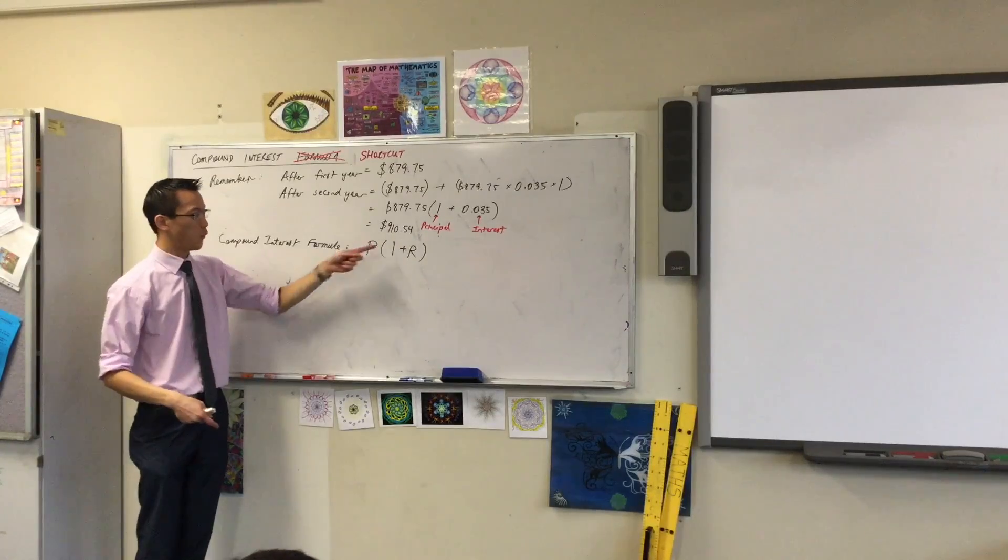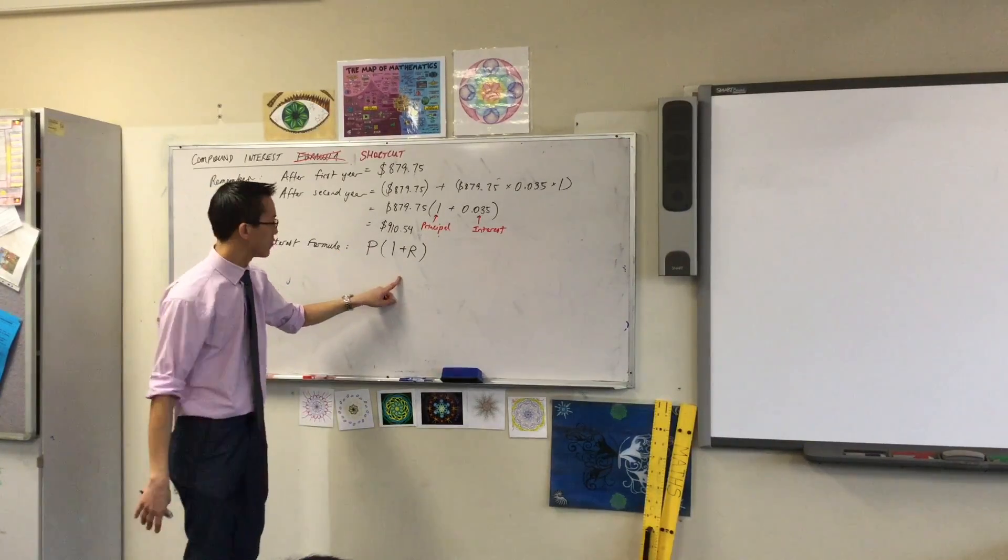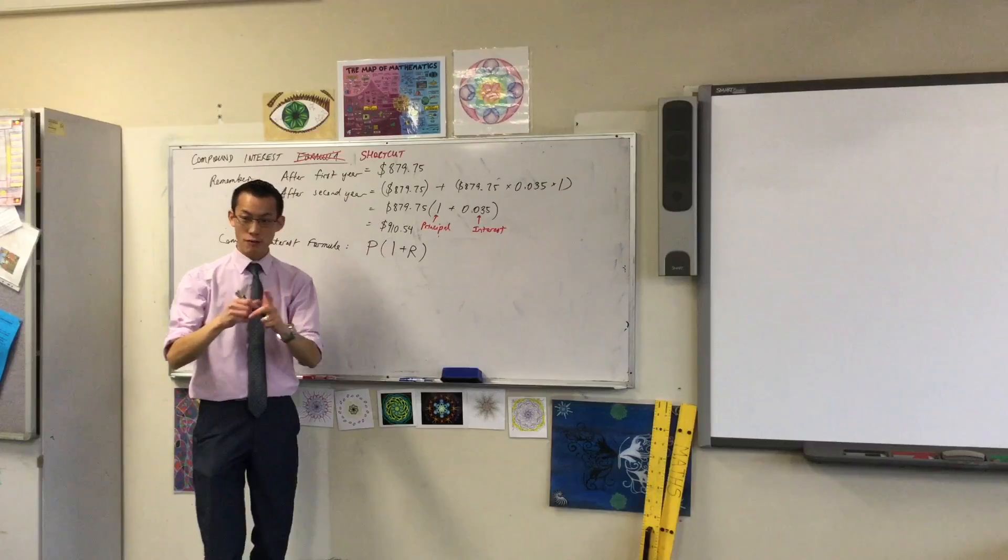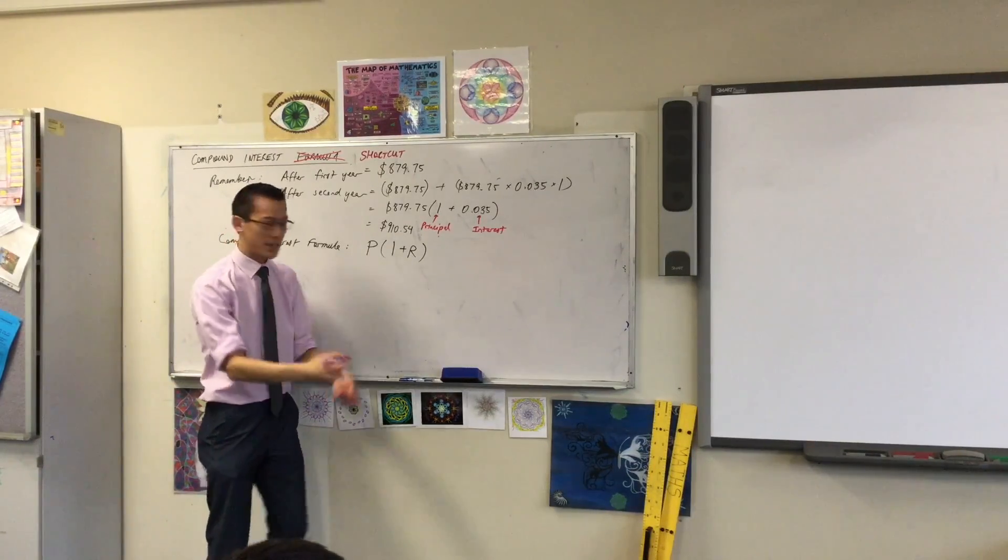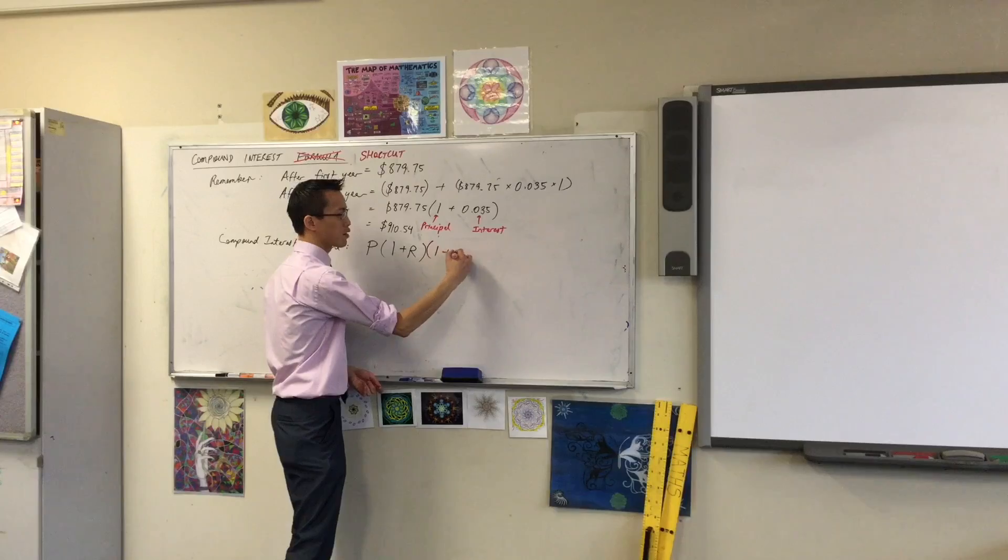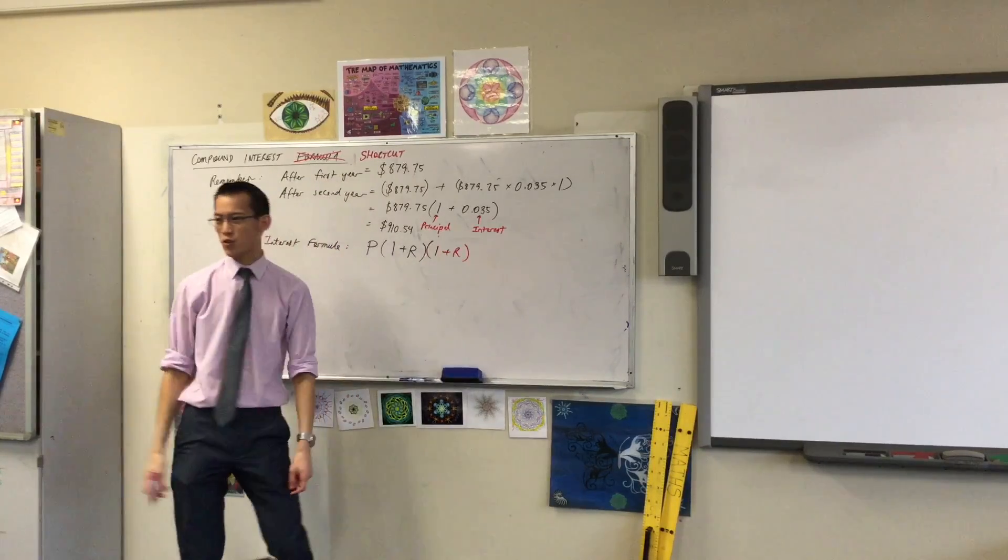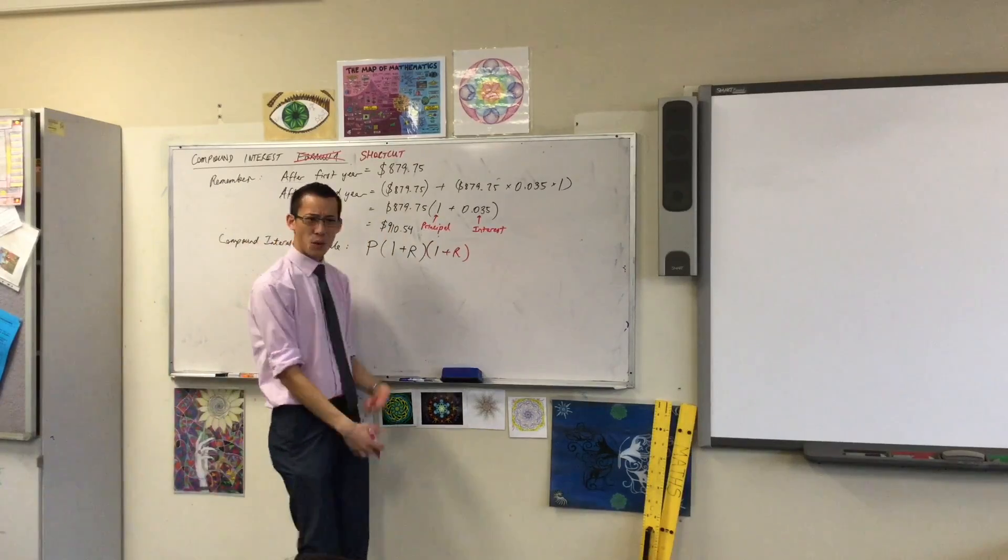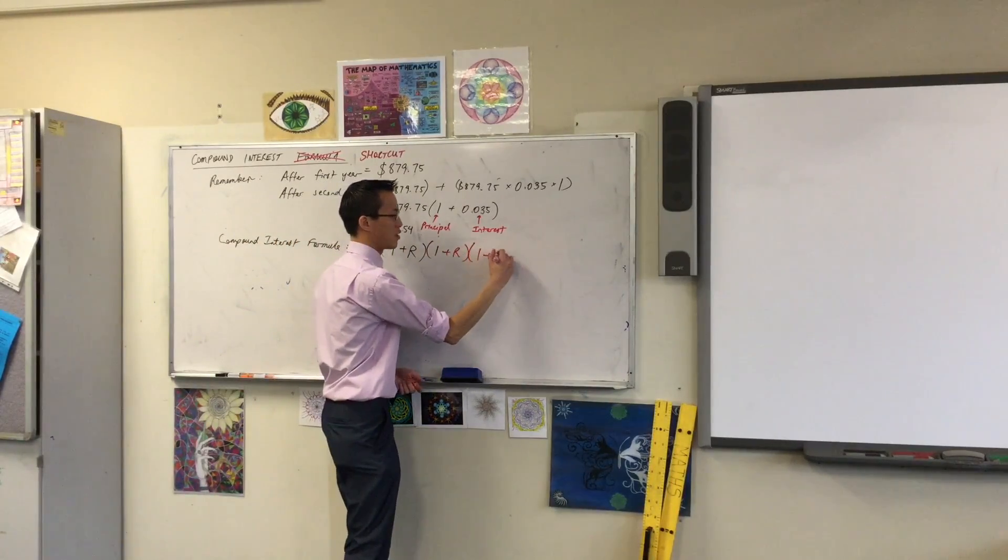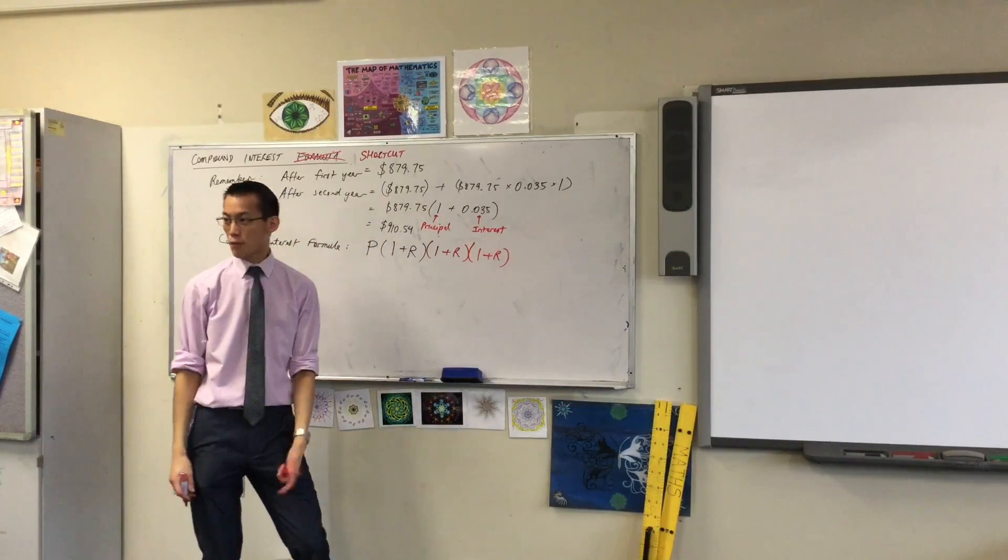Now, we were doing it one year at a time, but if I want to do it lots and lots of years, all I have to do is, now don't write this down because I'm going to rub off in a second. If I wanted to do another year, I would multiply by 1 plus the interest rate again, right? Just like I did it here, you do it for the third year, the fourth year. If I wanted to do it again, I would just multiply by 1 plus R repeatedly.